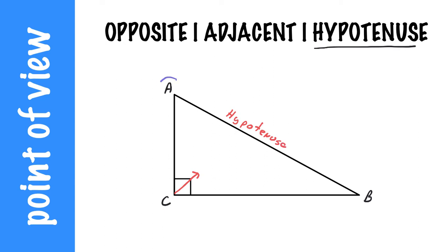Now looking at A's perspective. From A's perspective, this would be the opposite side. I'll use OPP for short. And again, from A's perspective, this would be the adjacent side. ADJ for short.